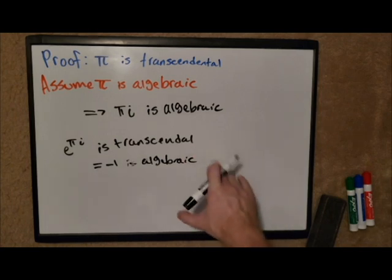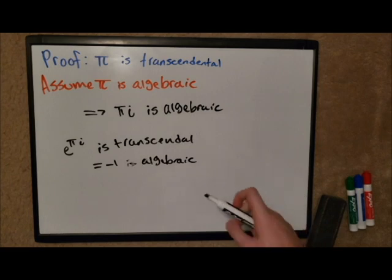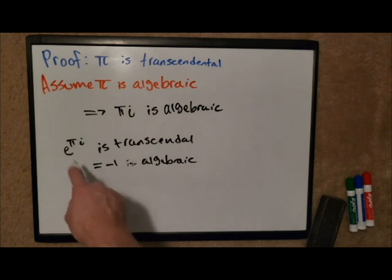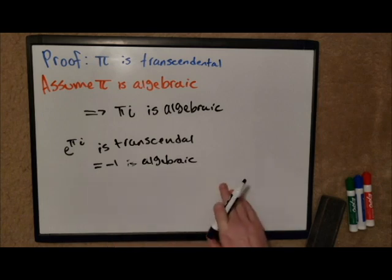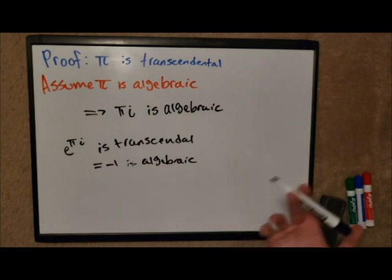So we actually know for a fact that this equals negative one, which is an algebraic number. So now we've arrived at our contradiction, this is the whole point of the proof here. These two things don't line up. We expect this number e to the pi i to be transcendental, but what we actually see is that it's algebraic. So we need to go back through everything that we've done so far and figure out where we went wrong.